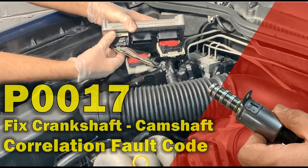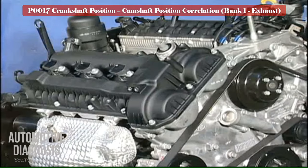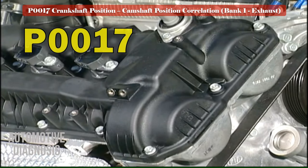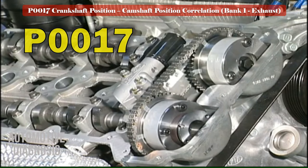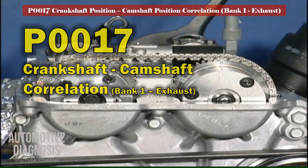Hello everyone and welcome to the Automotive Diagnosis YouTube channel. Today I will explain how to test and fix the P0017 crankshaft-camshaft position correlation fault code. PCM monitors the engine timing misalignment while the engine is fully warmed up by checking the engine timing through the crankshaft position and camshaft position sensors. P0017 will be set if PCM detects any timing misalignment on bank one exhaust side.